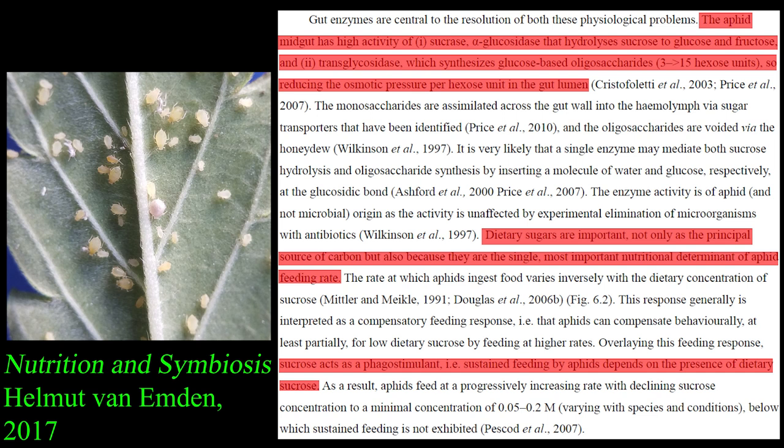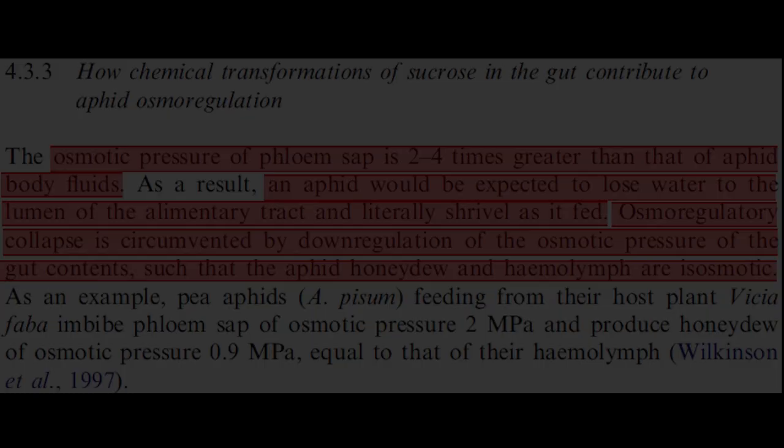Sucrose is the primary agent and gustatory cue that stimulates feeding behavior in aphids, but its osmotic pressure is massive at the rates in which aphids feed, and they feed for longer periods in order to consume more if levels are low. Such a massive amount of sugar intake and osmotic pressure would cause an uncontrolled flux of water from the aphid tissues to the gut lumen and shrivel the aphid's body, yet they persist unfazed.